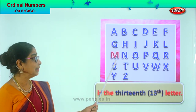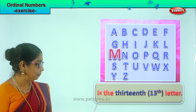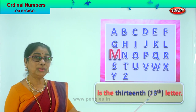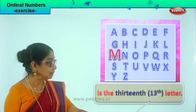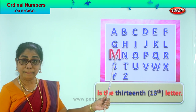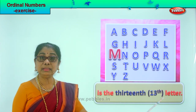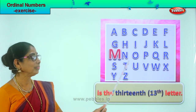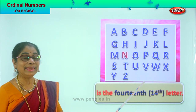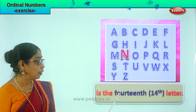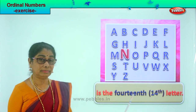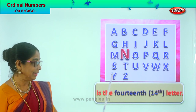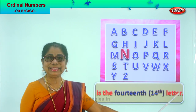After L, letter M — M is the thirteenth letter. You write thirteen and TH for thirteenth. M is the thirteenth letter. Next, N — N is the fourteenth letter. You write fourteen and TH. N is the fourteenth letter.